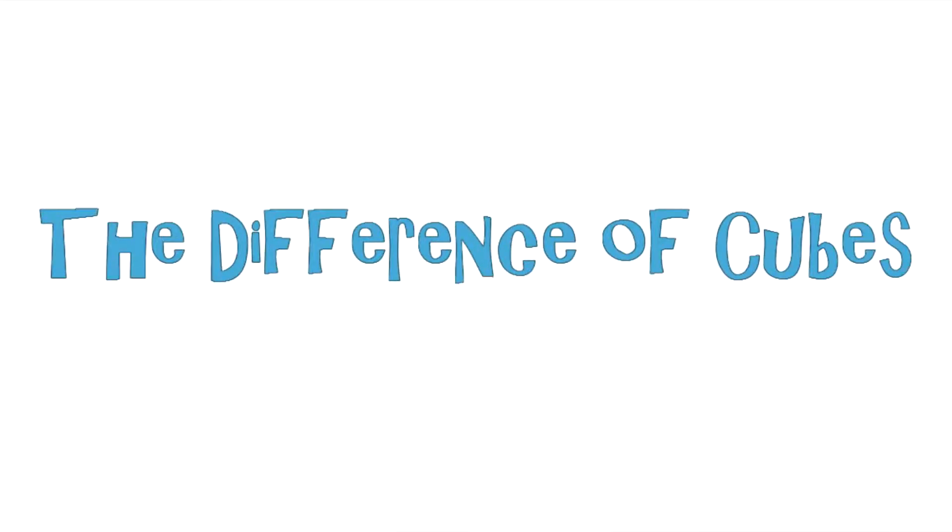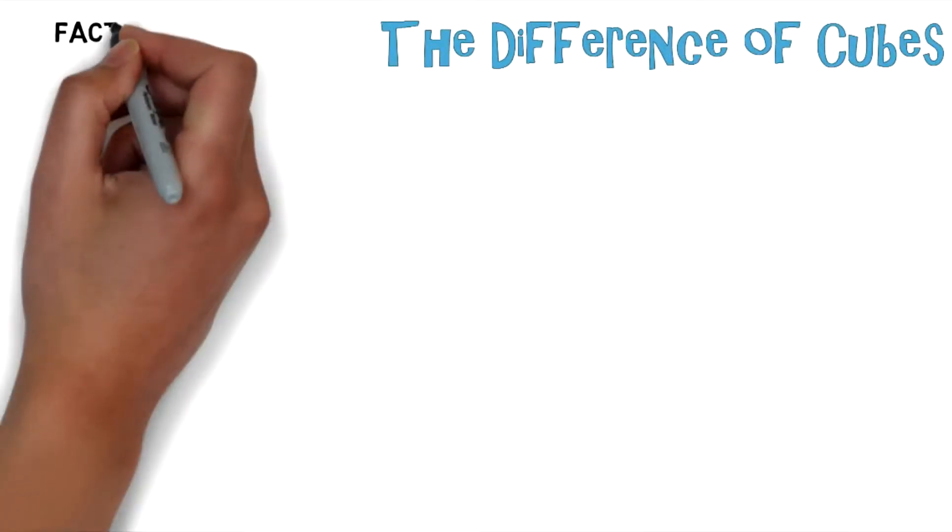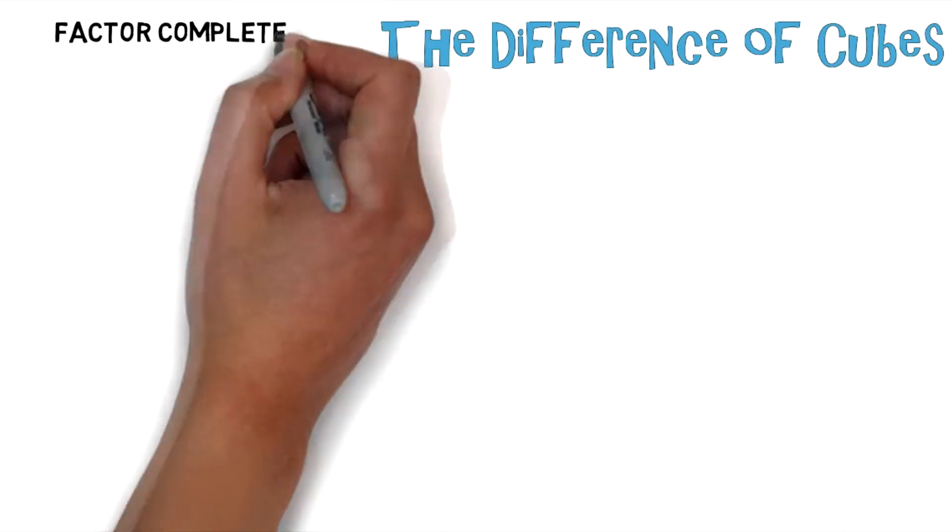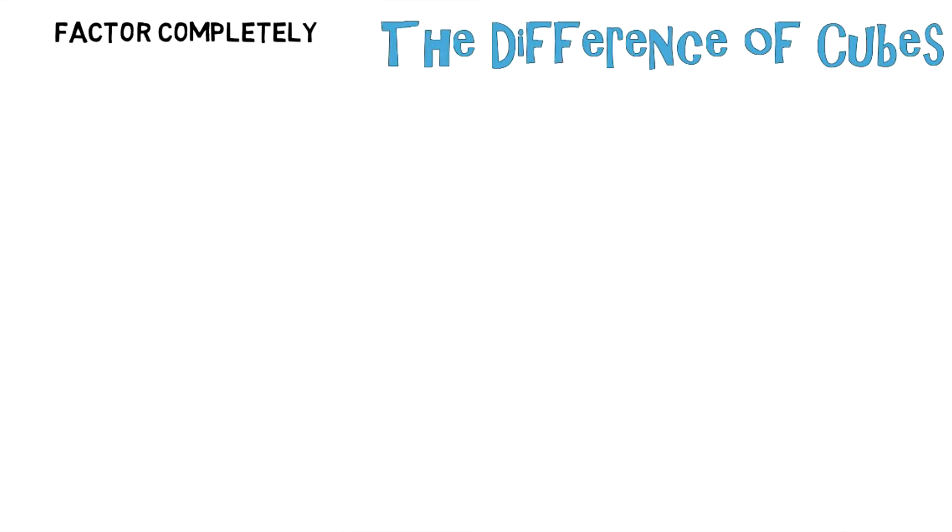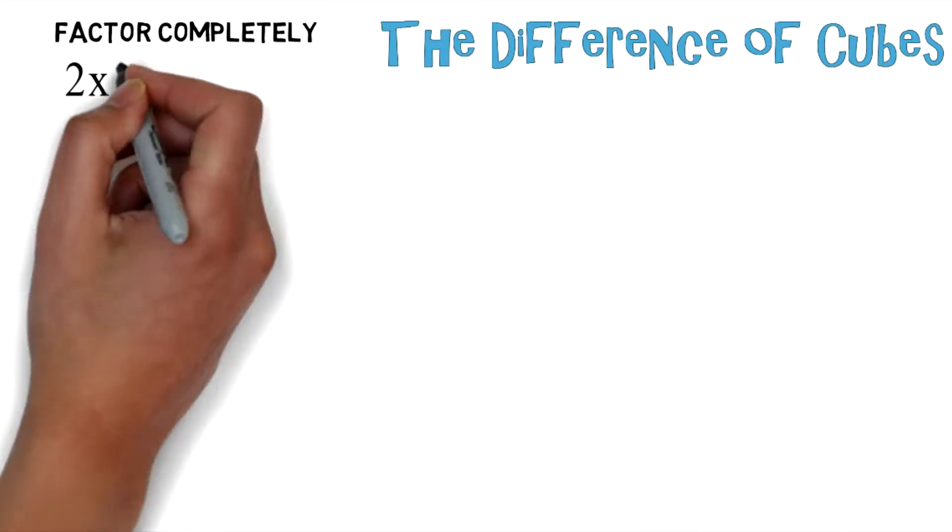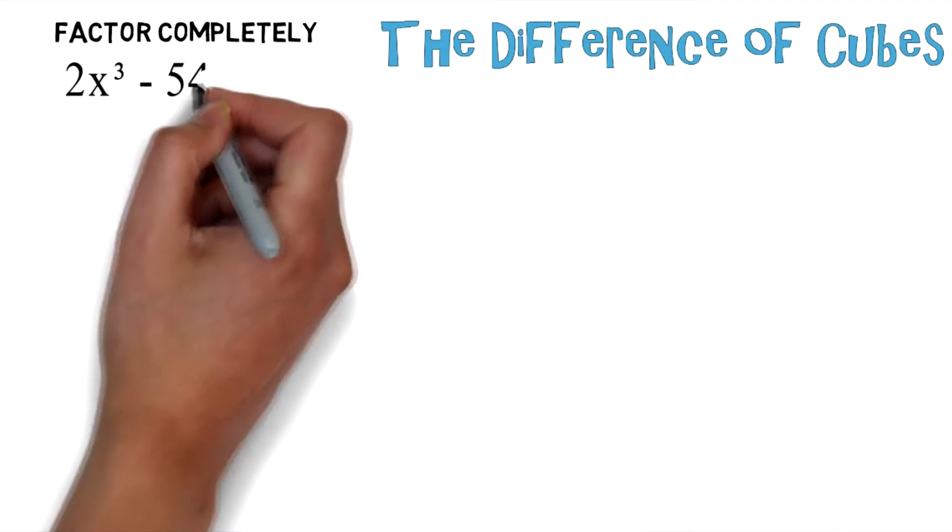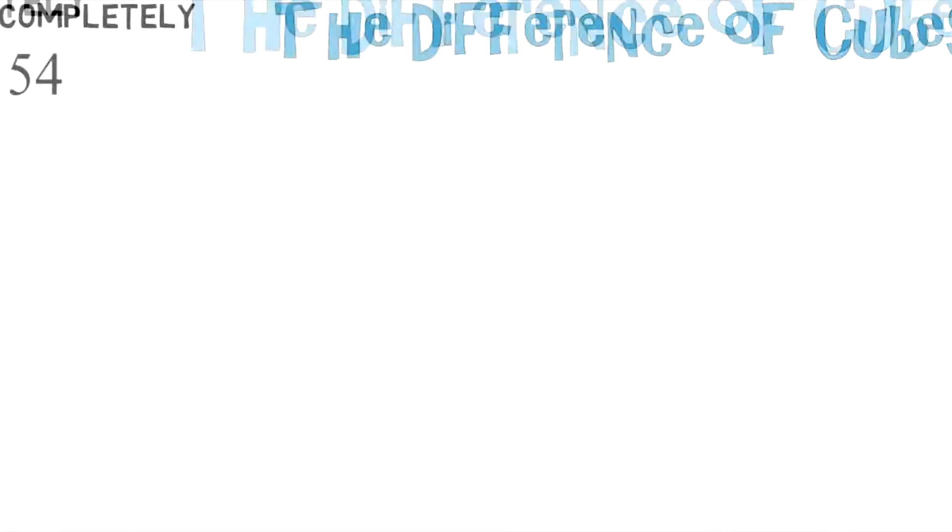Now let's begin with the difference of cubes. You're asked to factor completely and you're given 2x to the third power minus 54. I want you to stop for a second and think this problem out.